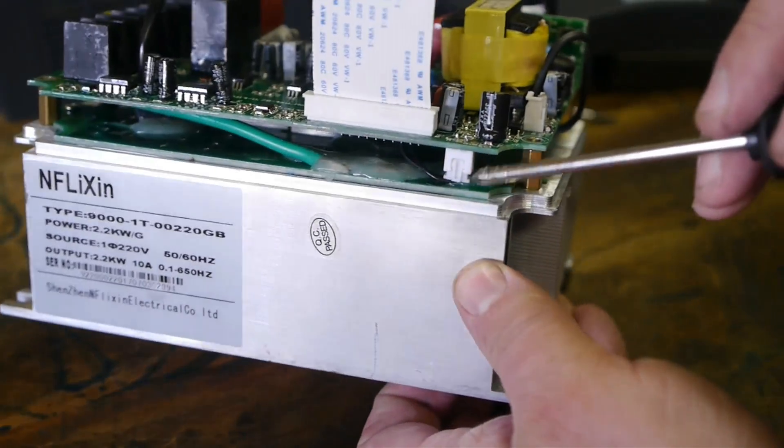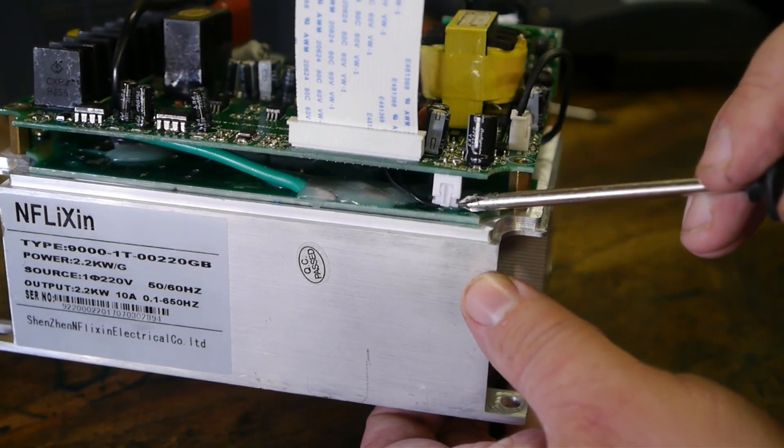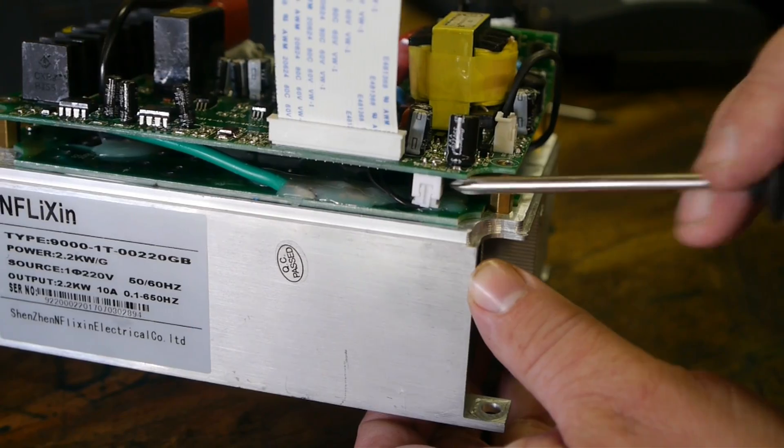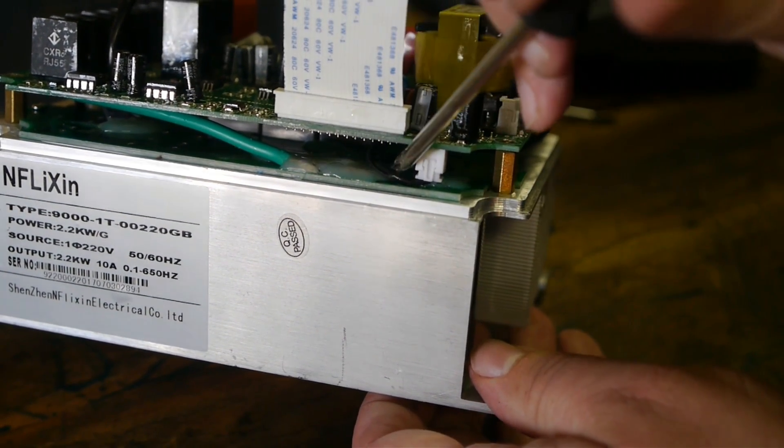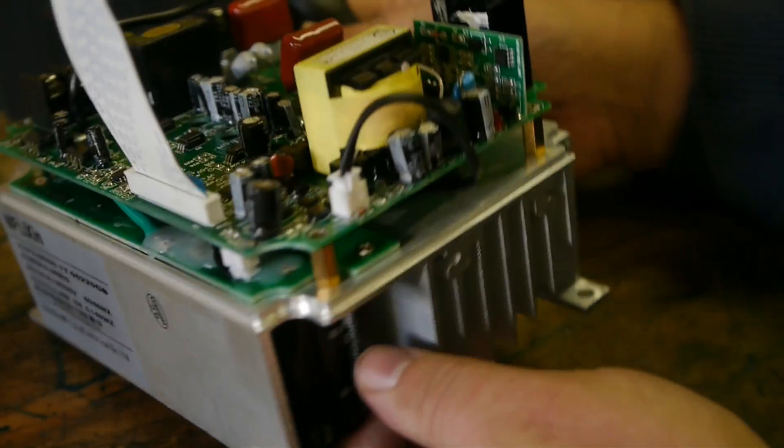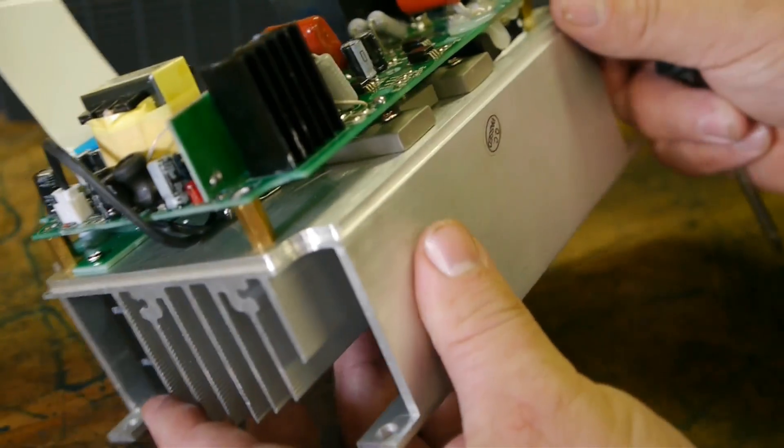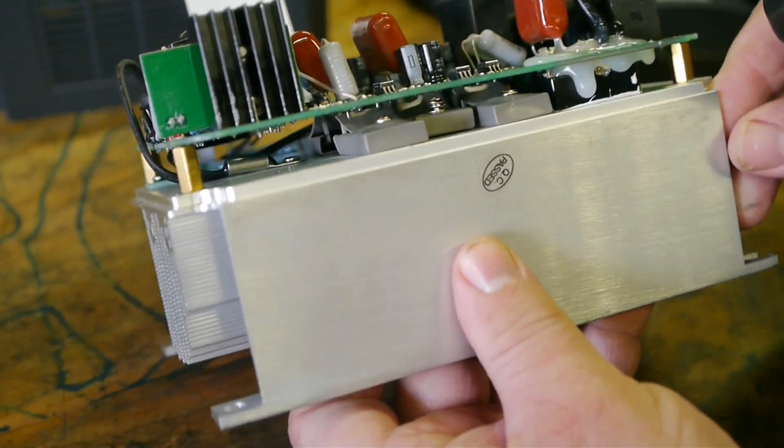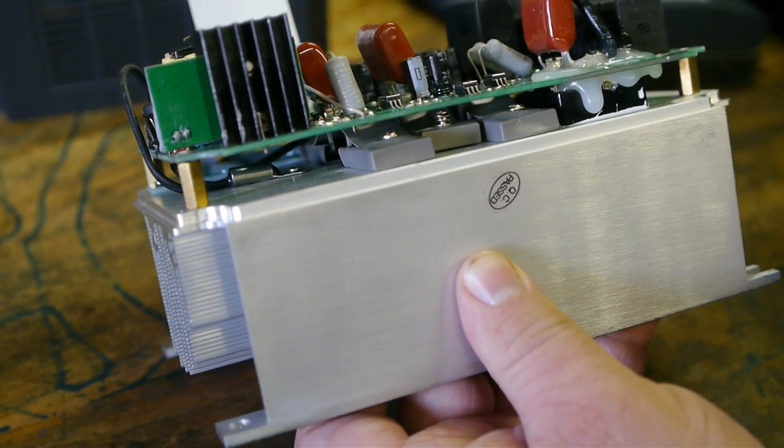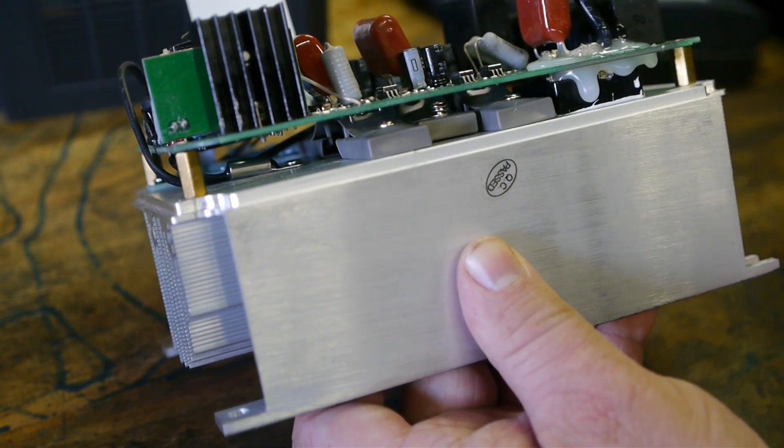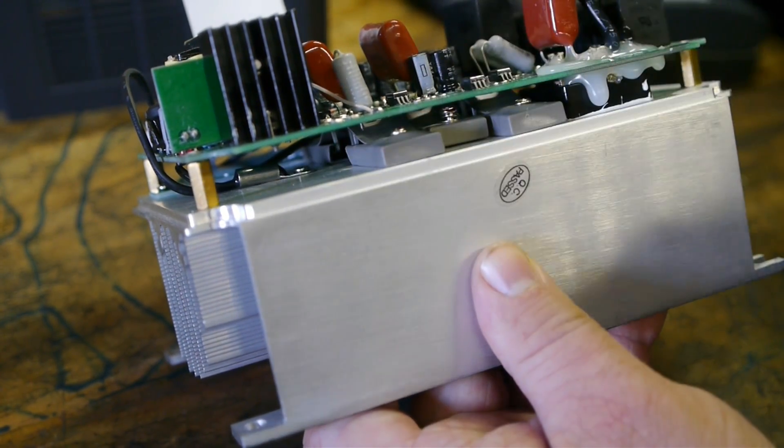On this side here, there's another one of those connectors. And this 2-lead cable connects to the heat sink over here. And I'm thinking this might be the temperature control switch.